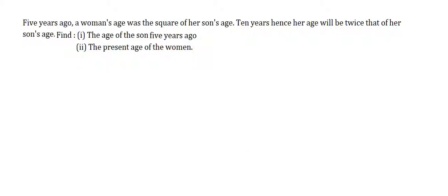Hi guys, welcome to the session, this is Prakash, math tutor. Let's solve the question which I have written on the whiteboard. Given: 5 years ago a woman's age was the square of her son's age. 10 years hence her age will be twice her son's age. We need to find the age of the son 5 years ago and the present age of the woman.